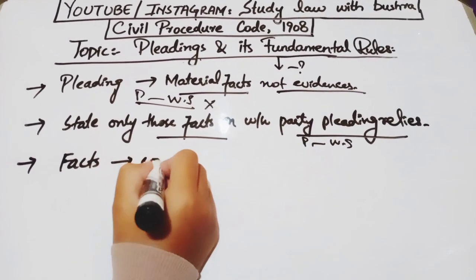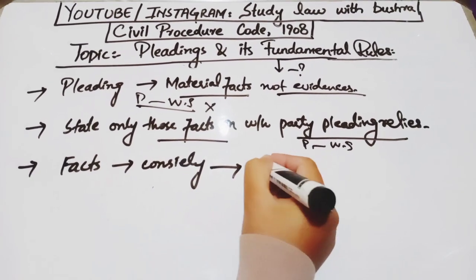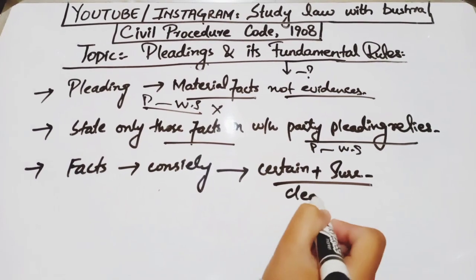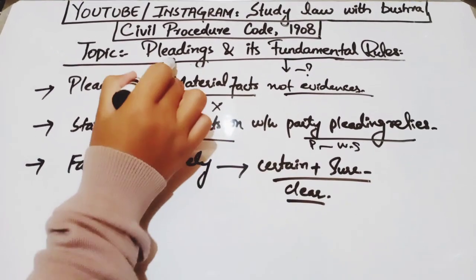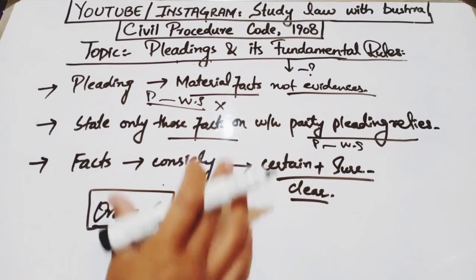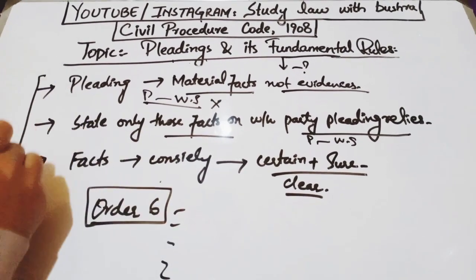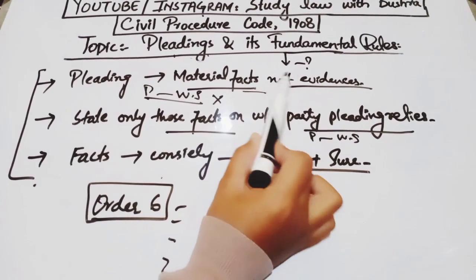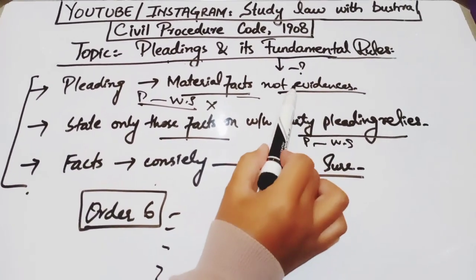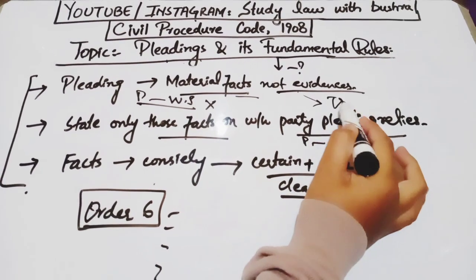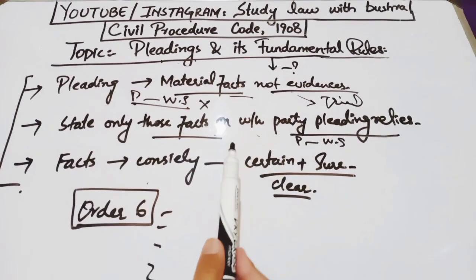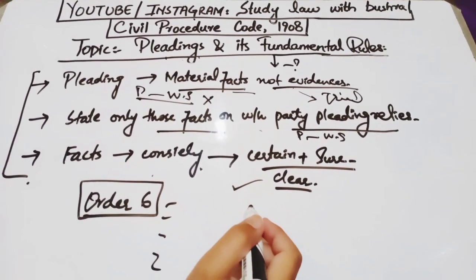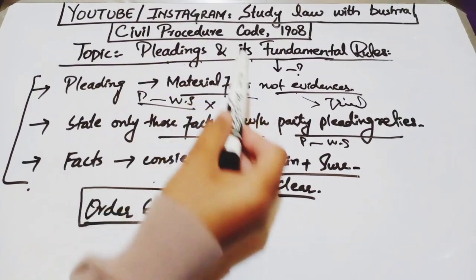The third rule is that all facts we mention in our pleading must be stated concisely — in precise form but with certainty. That means the things we are clear about, the things we are confirmed about, the facts about which we have surety — those are the relevant facts we need to mention. Although the rules of pleading are explained in great detail under Order 6, these are the rules that if someone asks you how you will draft your pleading — your plaint and written statement — you must say: mention only material facts, never mention evidence in pleading, include only facts the party relies on, and those facts must be clear, concise, and precise with proper certainty.